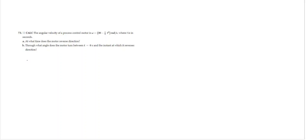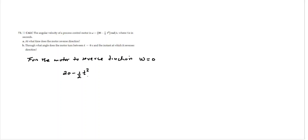We know that for the model to reverse direction, the angular velocity omega must be 0. So we take the equation of angular velocity, that is 20 minus one-half t squared, and make it equal to 0. This gives us 20 equals one-half t squared, so 40 equals t squared, and t equals plus or minus the square root of 40, which is approximately plus or minus 6.3 seconds.